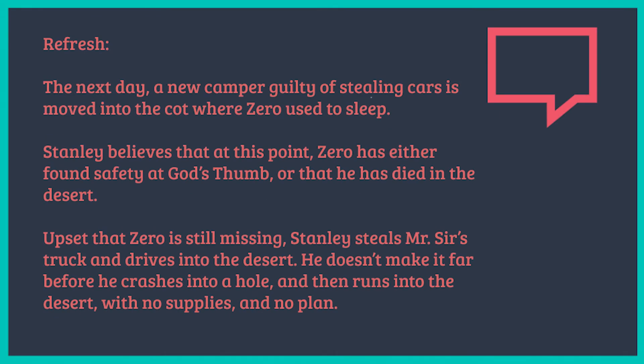In the final chapter of that reading, a new camper moves in and takes to the cot where Zero used to sleep. Stanley believes that at this point Zero has either found safety at God's Thumb, or that he has died of thirst in the desert. Upset that Zero is still missing, Stanley steals Mr. Sir's truck and drives it into the desert. He doesn't make it far before he crashes into a hole, and then Stanley proceeds to run into the desert with no supplies, no water, and no plan.